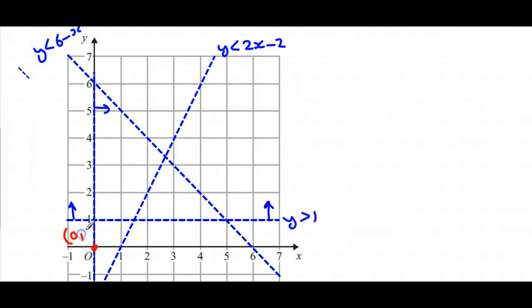If I plug 0, 0 into my first equation here, so y is 0 and x is 0, so 0 is less than 6. The question is, is that true or not? It is true, so that implies that this is the side that satisfies it. So for this line, it's everything in this direction.